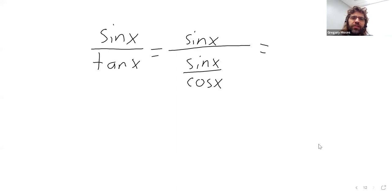And this simplifies. Let me write the details out. Because we've got the sine in the numerator of both these fractions. The sine cancels. And this is one divided by the cosine.